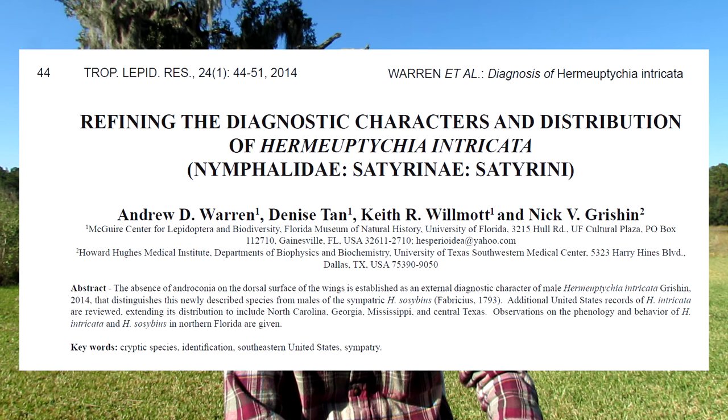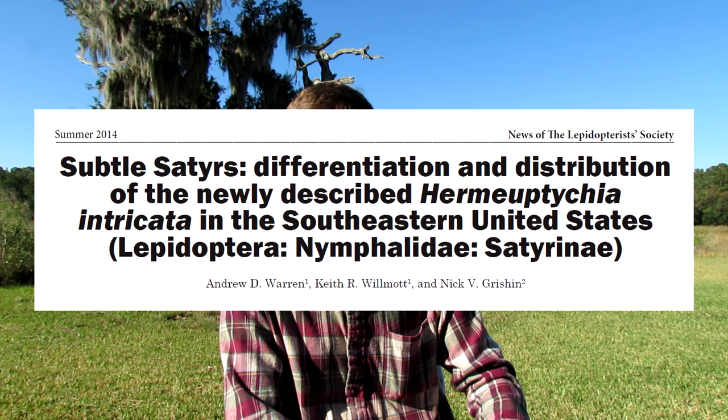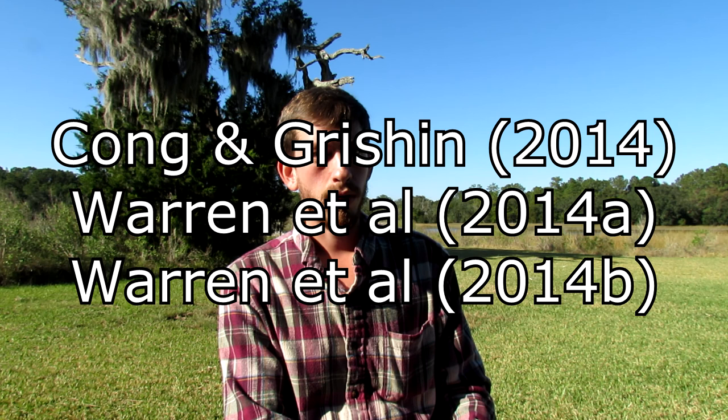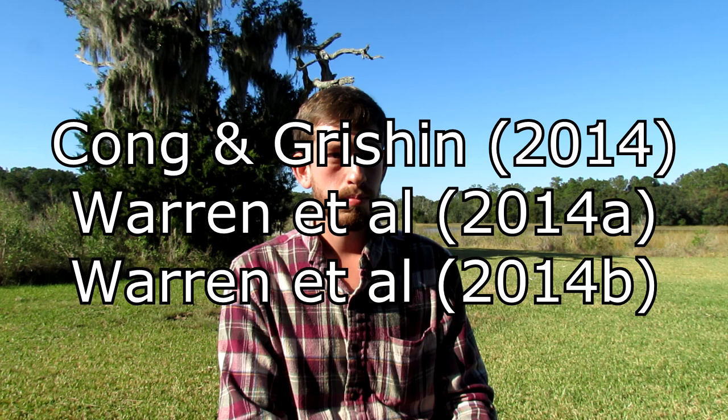Later that same year, another team of researchers in Florida described another morphological difference on the dorsal surface of the forewing in males. There's androconia on the wing in Carolina satyrs that appears as a visible dark spot at the base of the forewing, and this is absent in male intricate satyrs. They also made some comments on the behavior and habitat preferences of the two species in Florida, and in the locations they examined, they could not find any real discernible difference. Those three papers represent the sum total knowledge we have on the intricate satyr in published literature.